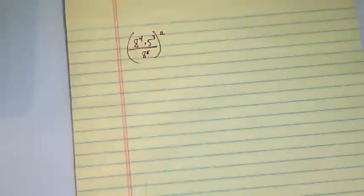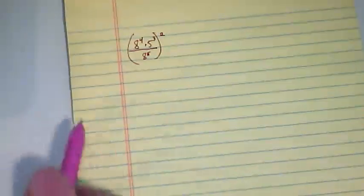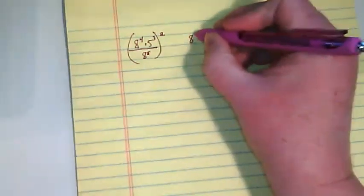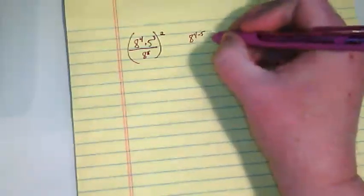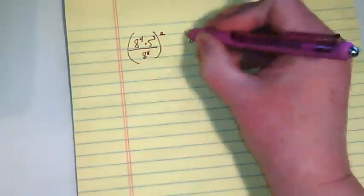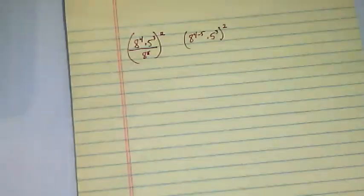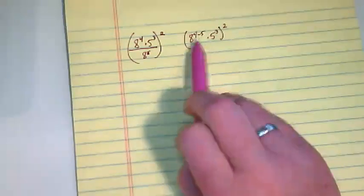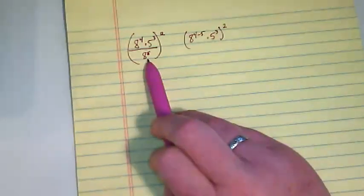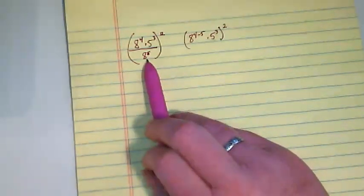We could solve this two ways. When I first did this, I did inside the parentheses first, thinking of order of operations. So I did eight to the four minus five times five to the third power, and that was raised to the second power.